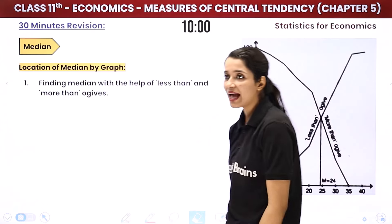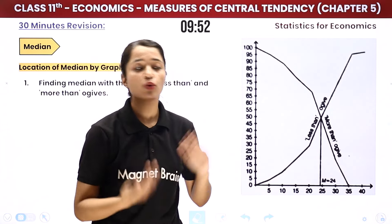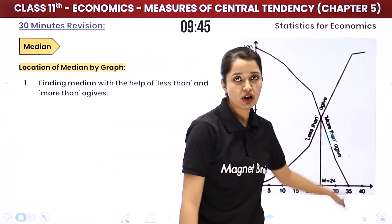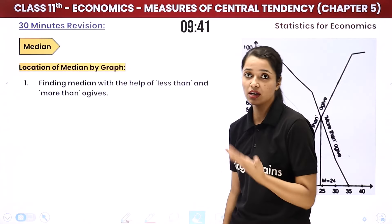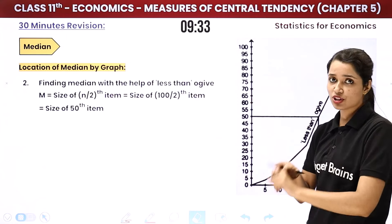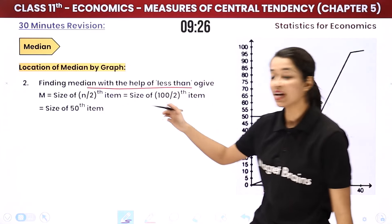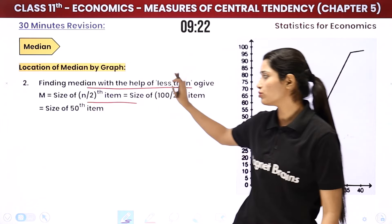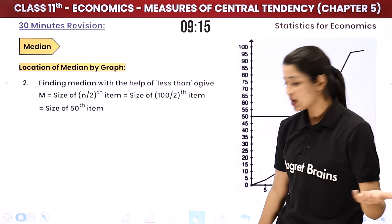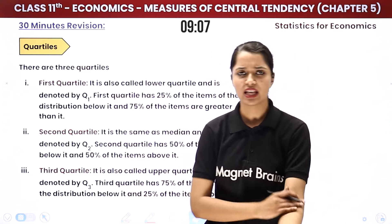For locating median by graph: plot cumulative frequencies on a graph for continuous series — draw both less-than and more-than ogives. Where these two curves meet, that particular point is your median. For finding median using only the less-than ogive: size of N/2 th item — for example with N=100, the size of the 50th item is your median. Graph-based median questions usually appear as theoretical questions, so focus is not heavily needed there.